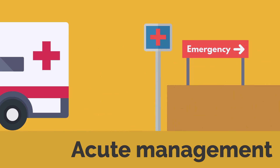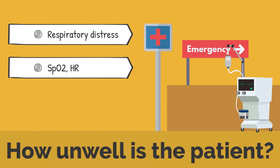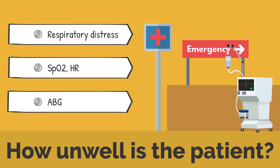Now let us take a look at the principles of management of heart failure in the acute setting. When a patient with acute pulmonary edema is brought into the emergency department, this patient is likely to be very breathless and in distress. The emergency department physician is likely to start treatment with IV diuresis and assess how unwell the patient is. Respiratory distress, low oxygen saturations, tachycardia, and evidence of respiratory failure on the arterial blood gas are signs that you are dealing with a very unwell patient.